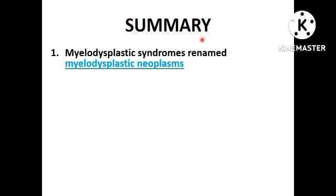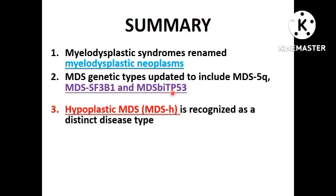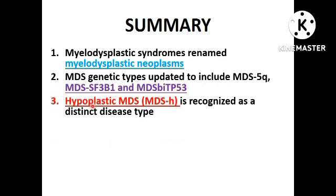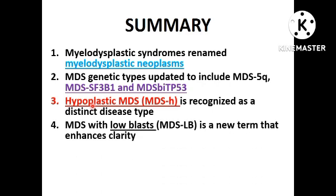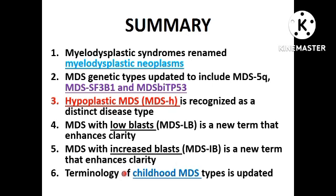To summarize: myelodysplastic syndromes are renamed as myelodysplastic neoplasms. There are three genetic subtypes under MDS: MDS with 5Q deletion, MDS with SF3B1 mutation, and MDS with biallelic TP53 inactivation. A new category, hypoplastic MDS, must be differentiated from germline pathogenic variants evolving into MDS. Blast percentage cutoffs define MDS with low blast versus increased blast, and childhood MDS terminology and subtypes have been updated.